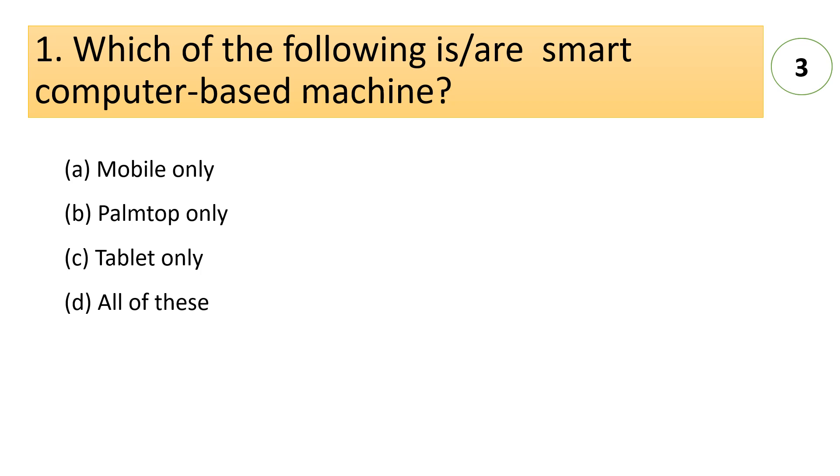Which of the following is or are smart computer based machines? A. Mobile only. B. Palm tab only. C. Tablet. D. All of these. Answer is D. All of these. All of these are smart computer based machines.